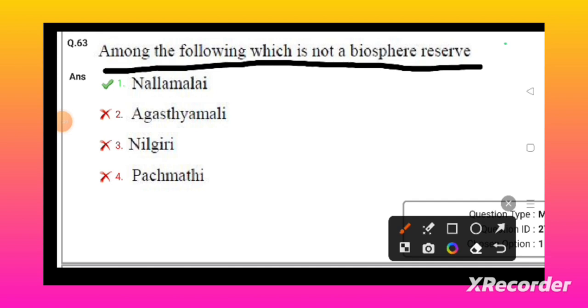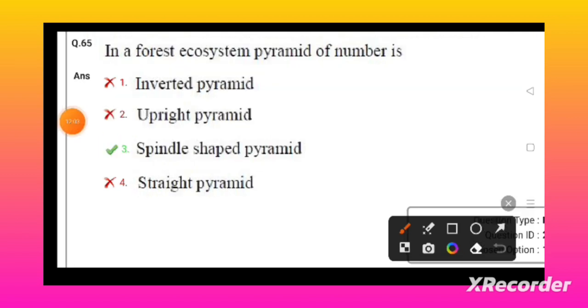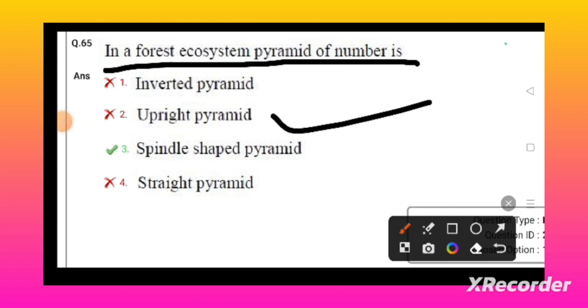Popular charismatic species of an ecosystem is called flagship species. In a forest ecosystem, the pyramid of number is upright. TRAFFIC is the wildlife trade monitoring network.